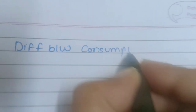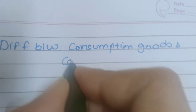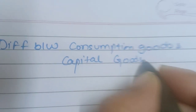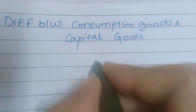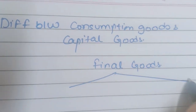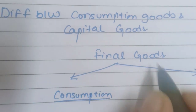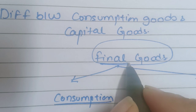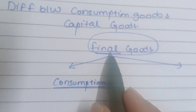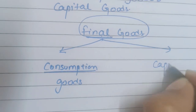Today we are going to discuss the difference between consumption goods and capital goods. When we talk about final goods, there are two types: consumption goods and capital goods. What we consume is known as consumption goods, and what we invest is known as capital goods.